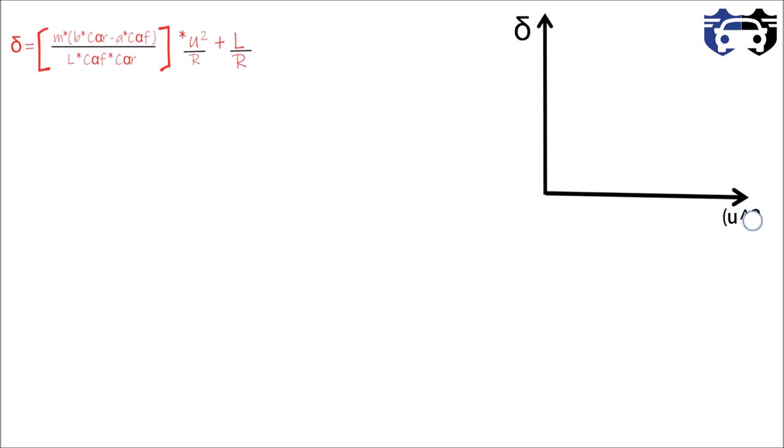Case 1 is b*C_alpha_r = a*C_alpha_f. On putting this in the above equation we get delta = L/R. So the curve for Case 1 will be a straight line, as delta is constant for the constant value of turning radius.